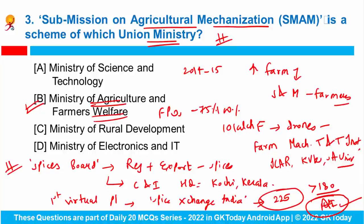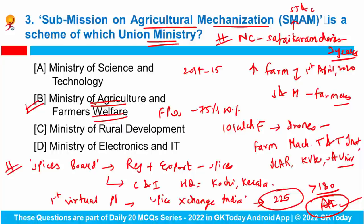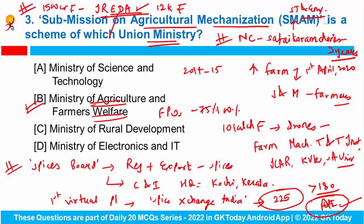The Union Cabinet has approved the extension of the National Commission for Safai Karmacharis for three more years with effect from 1st April 2022. It is a body under the Ministry of Social Justice and Empowerment. Cabinet has also approved the infusion of 1500 crore rupees in the Indian Renewable Energy Development Agency Limited, which will raise its lending capacity to 12,000 crore rupees. This is a Mini Ratna government enterprise under the Ministry of New and Renewable Energy.